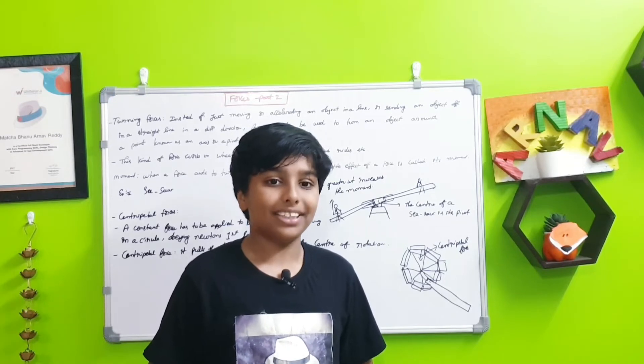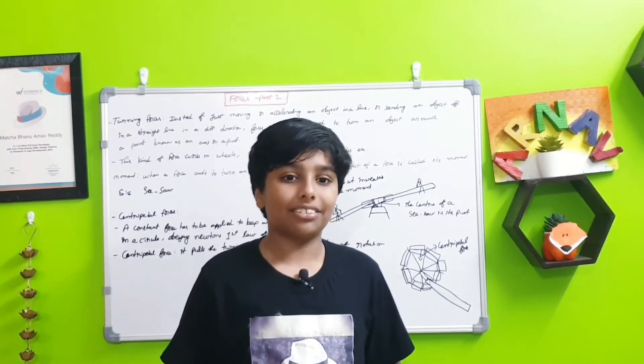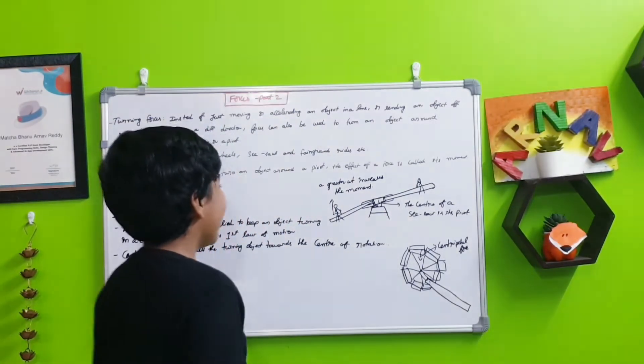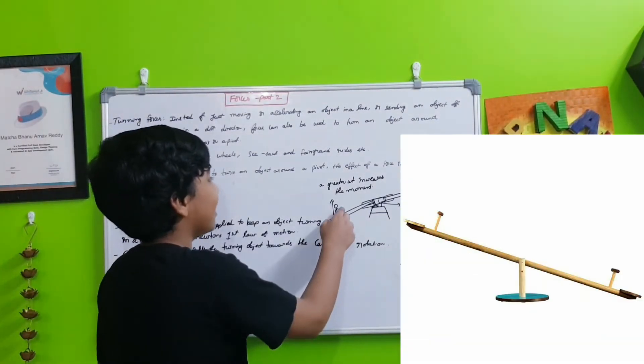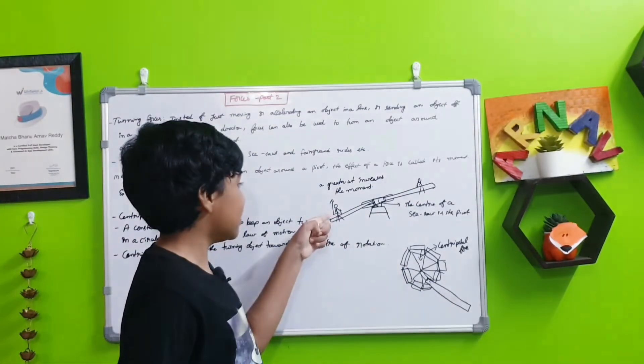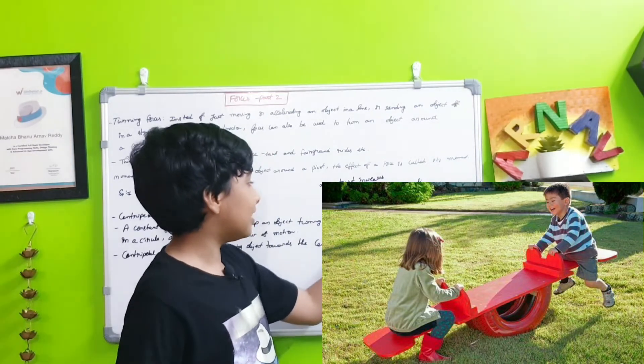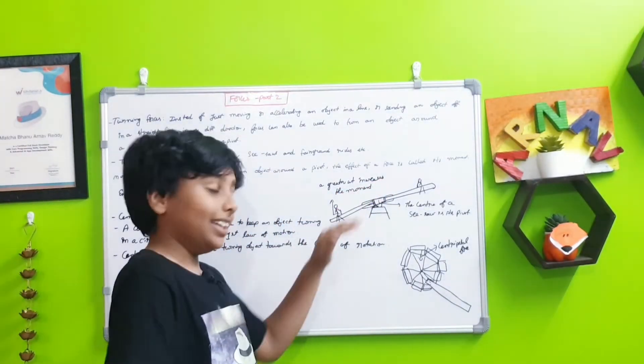The moment is measured in newton meters. An example is the seesaw. Here there's a greater weight, so this increases the moment. For example, think of this person having a greater weight than this person, so because of that the seesaw will tilt like this.